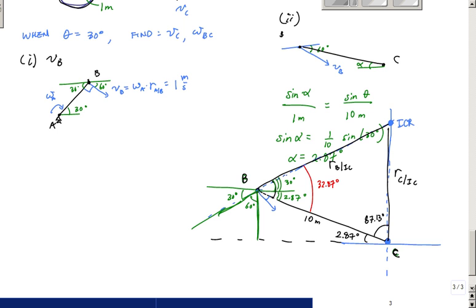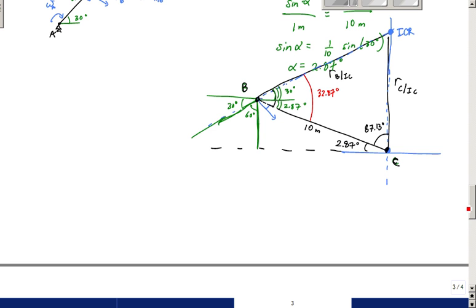So with a little complicated geometry, any problem you can solve. Right? And so now we use the law of sines to get all these other lengths. So here we have sine of 32.87 degrees over rc_ic is equal to the sine of 87.13 degrees over rb_ic is equal to sine of this angle, which I'll call gamma, over 10 meters.